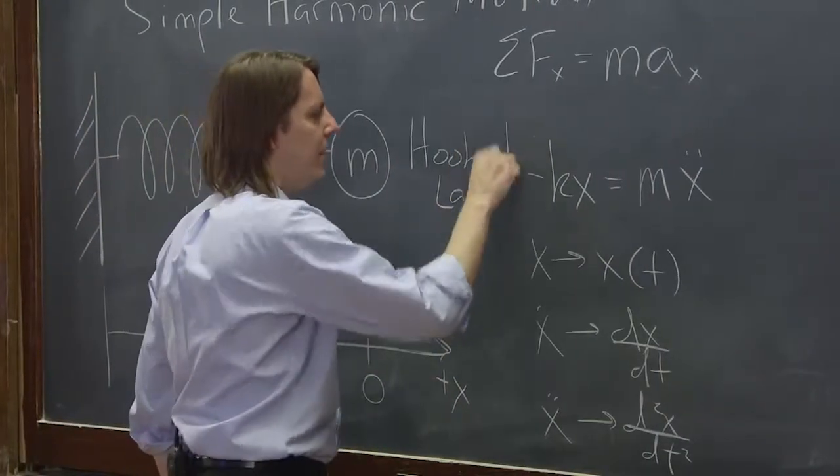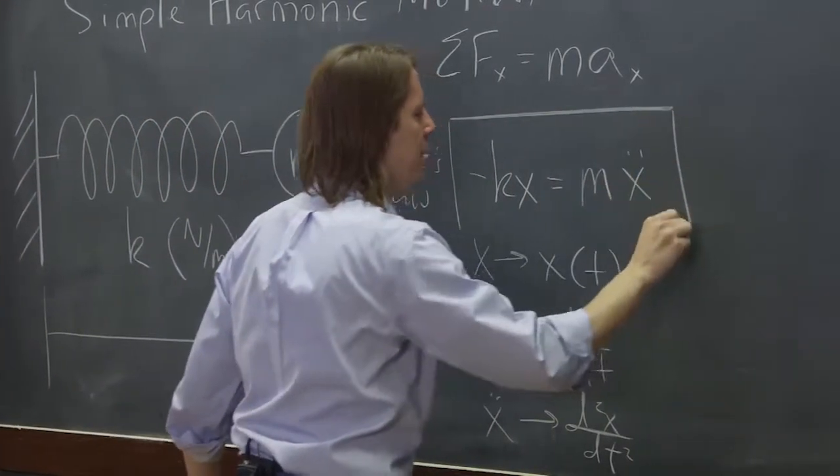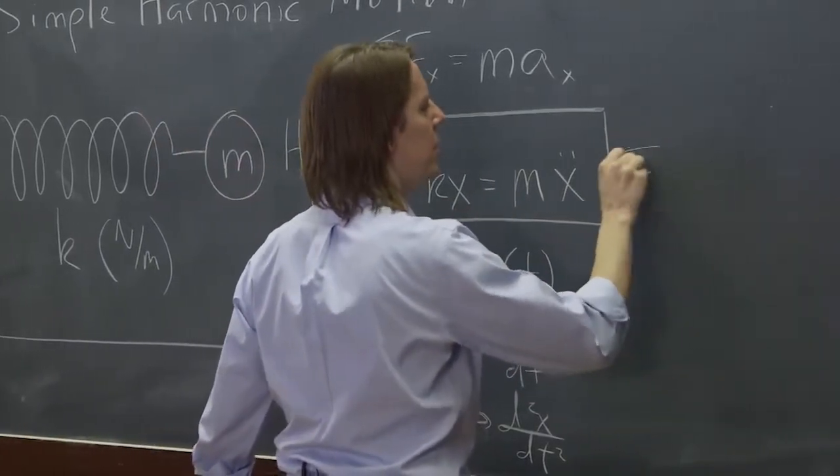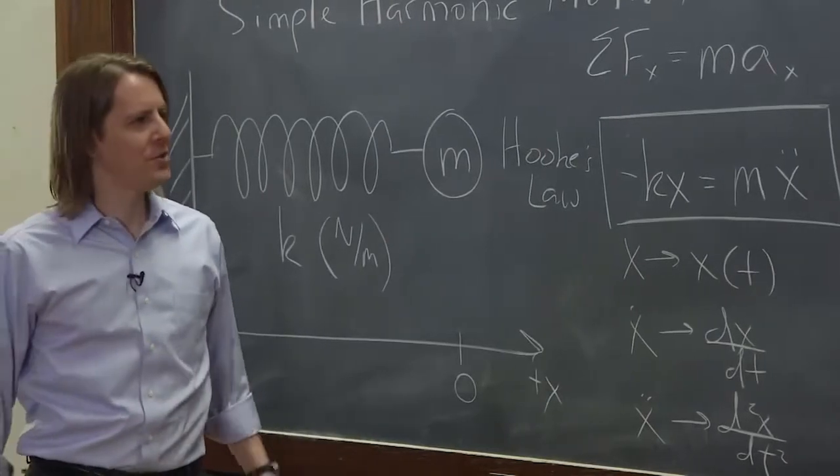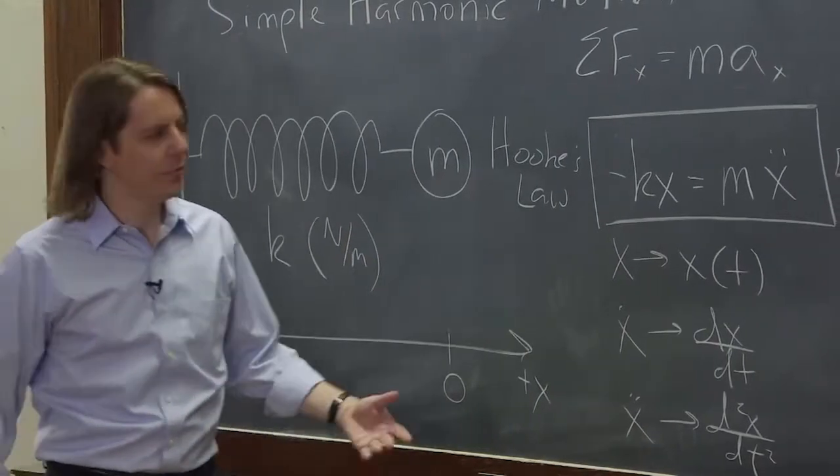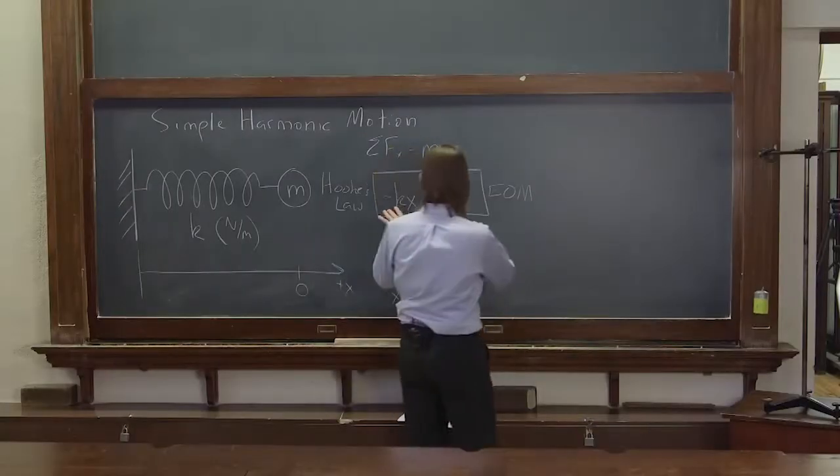So now we have our equation of motion, minus kx equals mx double dot. So if you're new to differential equations, here's your second one. So let's solve it. We could attempt to solve it by integration.